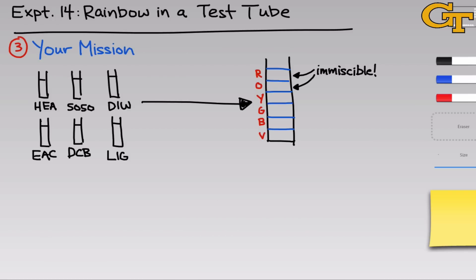The substances also need to go from most dense at the bottom to least dense at the top. If they don't go in this order, then an upper layer will sink down after initial construction of the rainbow to the position determined by the density gradient that gets set up.